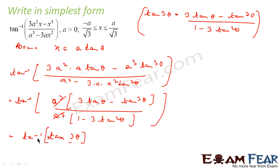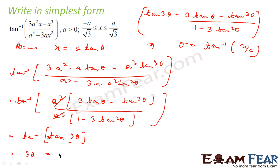Because tan(3θ) equals that formula, this becomes 3θ. Since x = a·tanθ, we get θ = tan⁻¹(x/a), so 3θ = 3·tan⁻¹(x/a). That is the answer. The simplified version of this big formula is nothing but 3·tan⁻¹(x/a). We assumed x = a·tanθ because we recognised the tan(3θ) formula.